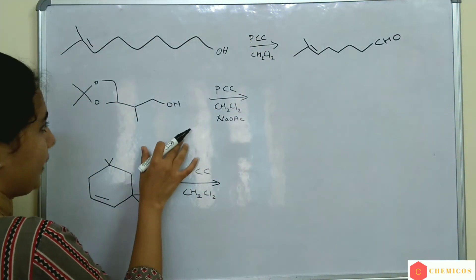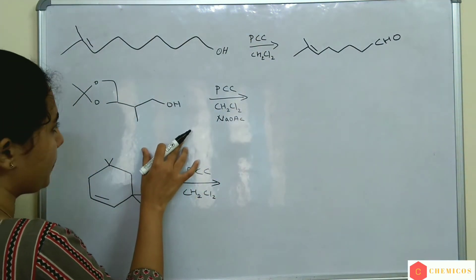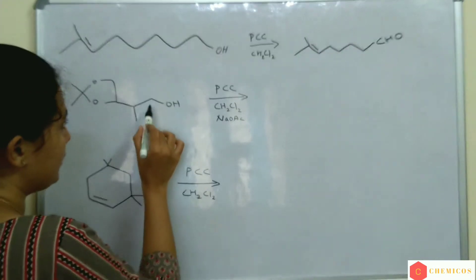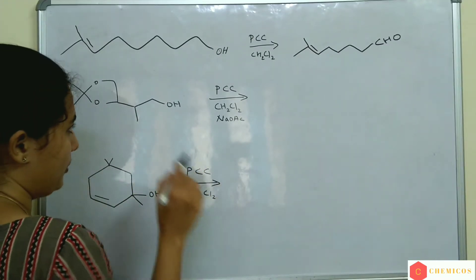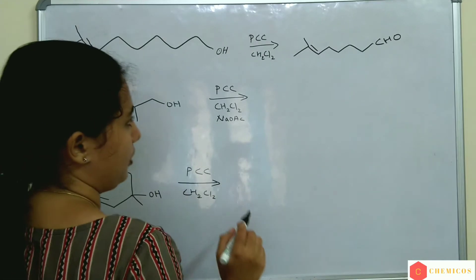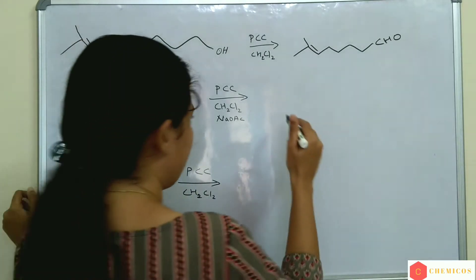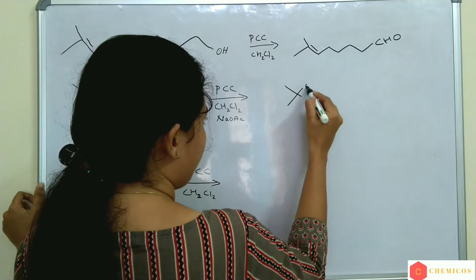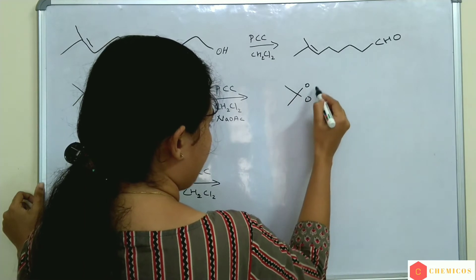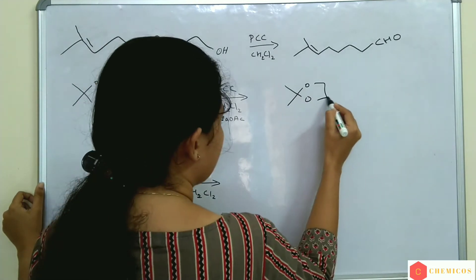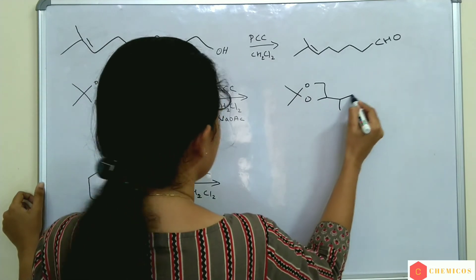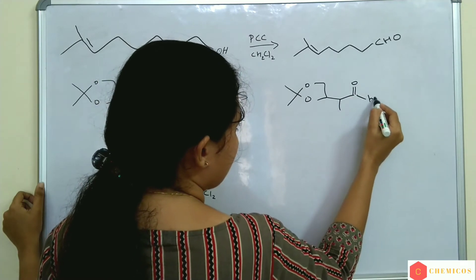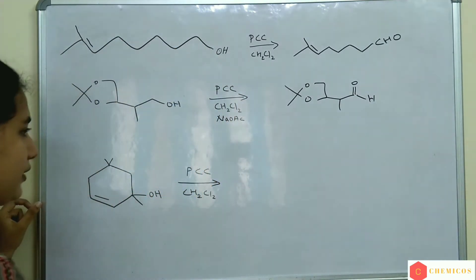Second example: this is a primary alcohol — this carbon is attached to only one carbon, so it is a primary alcohol. When treated with PCC, CHO (an aldehyde) is formed.